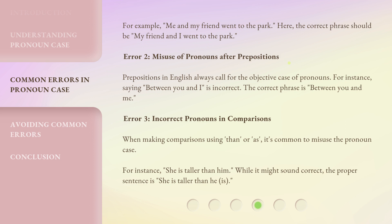Error 2: Misuse of pronouns after prepositions. Prepositions in English always call for the objective case of pronouns. For instance, saying 'between you and I' is incorrect. The correct phrase is 'between you and me.'